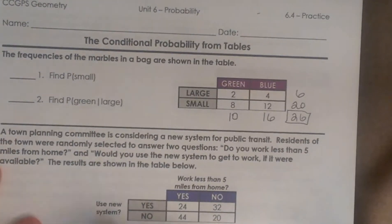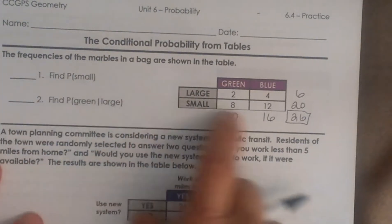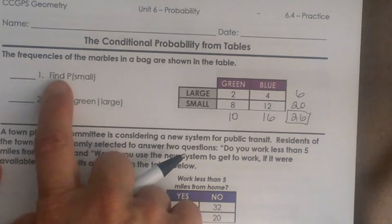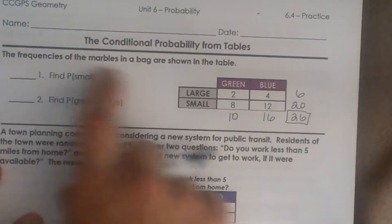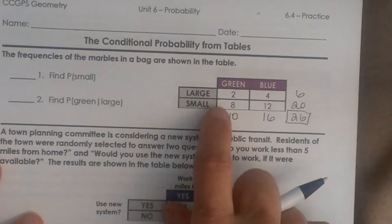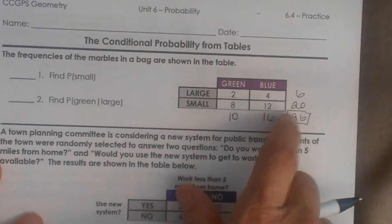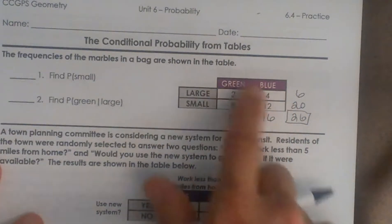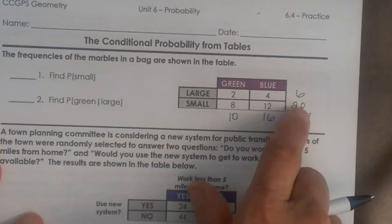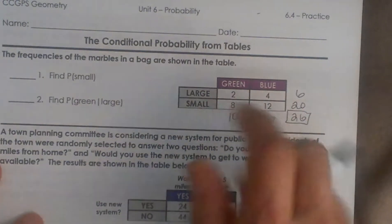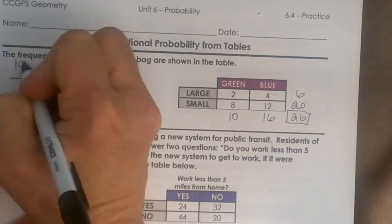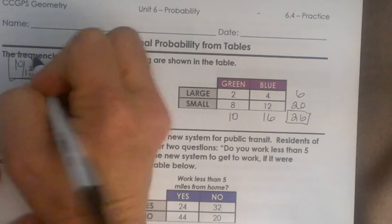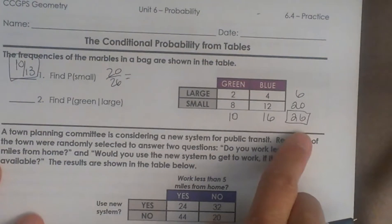Let's start off on our note taking guide. We've got: find the probability that you are choosing a small marble, because we have marbles in a bag. Finding the probability of small — we just add up, we don't care what color they are, we just want to know how many small ones. We have 20 small ones out of 26, so that's 20 out of 26, which reduces to 10 thirteenths.